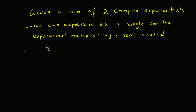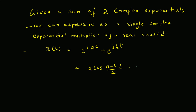So given a signal x of t which has the following structure — that is e^(j·a·t) plus e^(j·b·t) — it can be combined as two times cos of ((a minus b)/2)·t, multiplied by e^(j·(a plus b)/2·t).